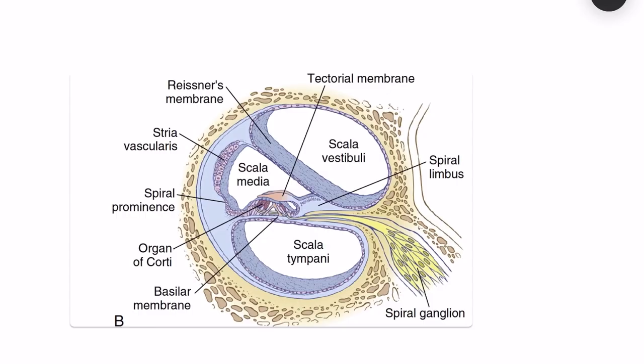This is a cut section of the cochlea showing the various membranes and the organ of Corti, and how it is arranged. The cochlea continues along its length, and this cut section shows the various compartments.